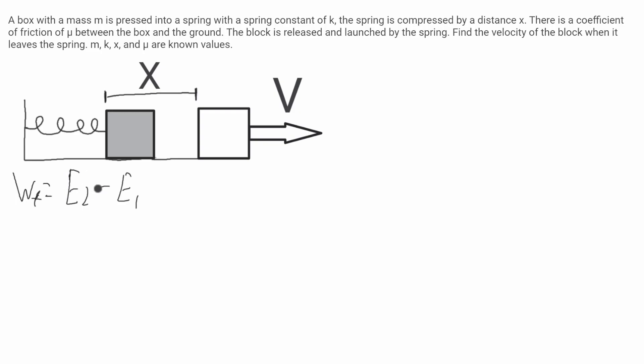Energy 2 will be when the block is in motion. It'll only be kinetic, so work of friction will be equal to the kinetic energy of the block minus the energy initial, which is just the energy in the spring, which will be potential of spring. So this will be work of friction. It's equal to 1/2 mv squared minus 1/2 kx squared.